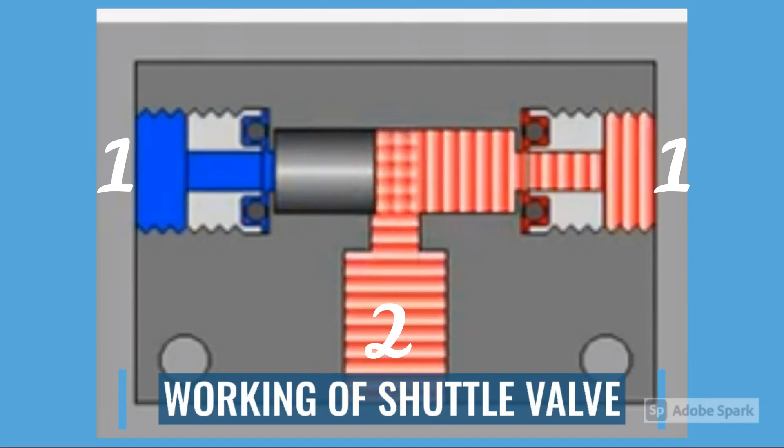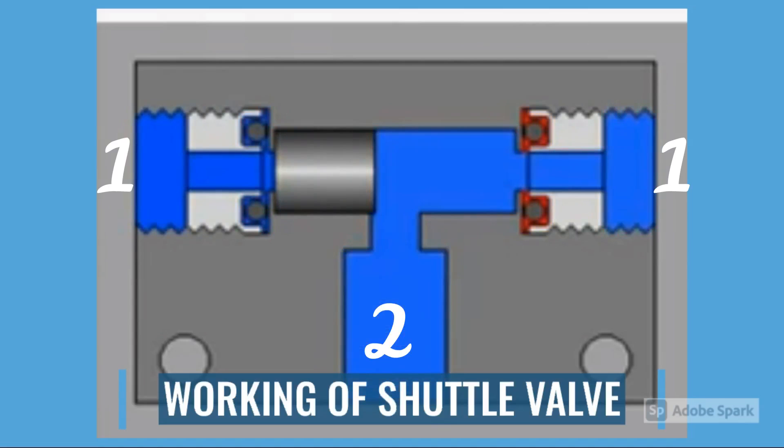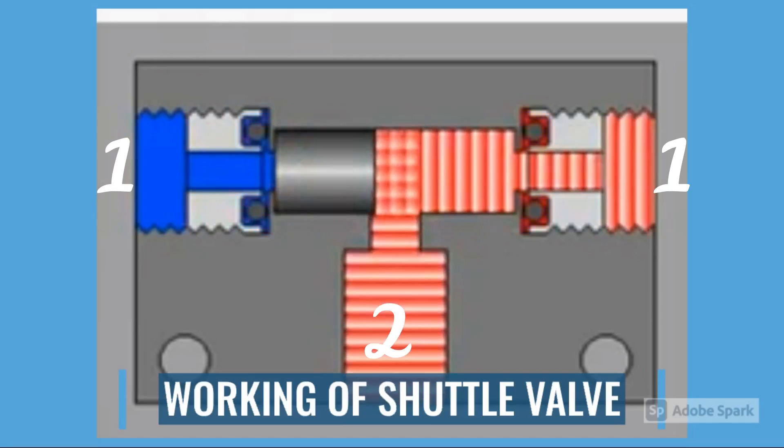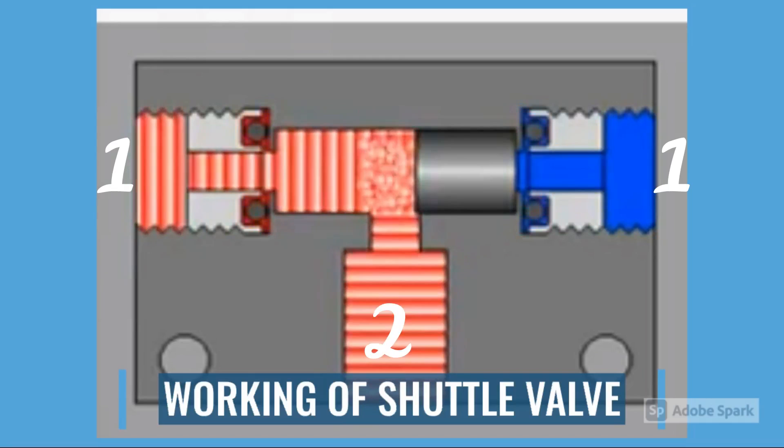When pressure is exerted through an opening on one end, port 1, it pushes the ball towards the opposite end. This prevents the fluid from traveling through that opening but allows it to flow through the middle opening, port 2.